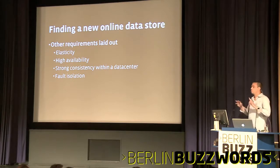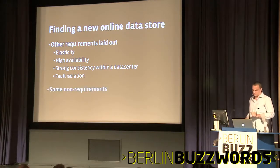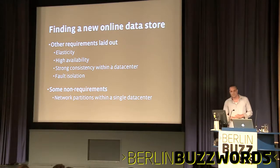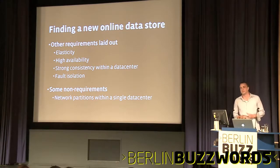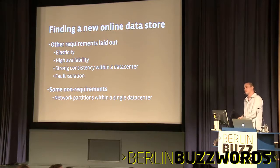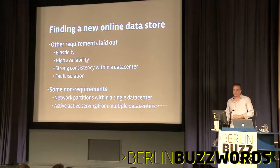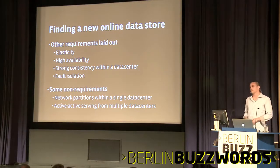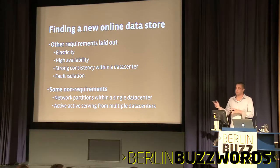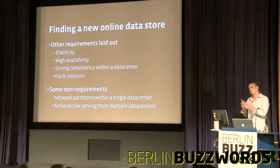We also had some non-requirements. Network partitions within a single data center — the reason this was a non-requirement is basically because of how our existing systems work. If we had a network partition inside a data center, we were already screwed. Second non-requirement: active-active serving for multiple data centers. Because of our existing architectures, any given user was always being pinned to a single data center, so an individual user didn't have to read from two data centers at once.